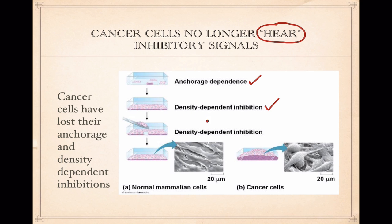Cancer cells are able to continue growing beyond this single layer situation and form mounds of cells — it even looks a little bit like a tumor. Here are some nice, well-behaved non-cancerous cells in this picture, and here are some malignant cells, cells that are growing out of control and forming a lump. We would call these cancerous cells, and we'll call these normal cells. Cancer cells have lost their anchorage and density-dependent inhibition.